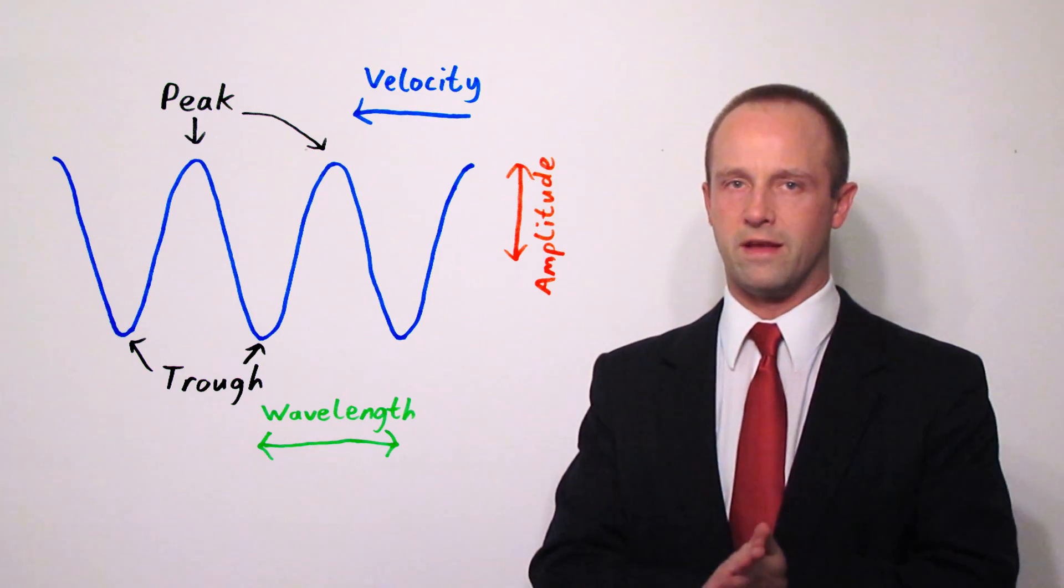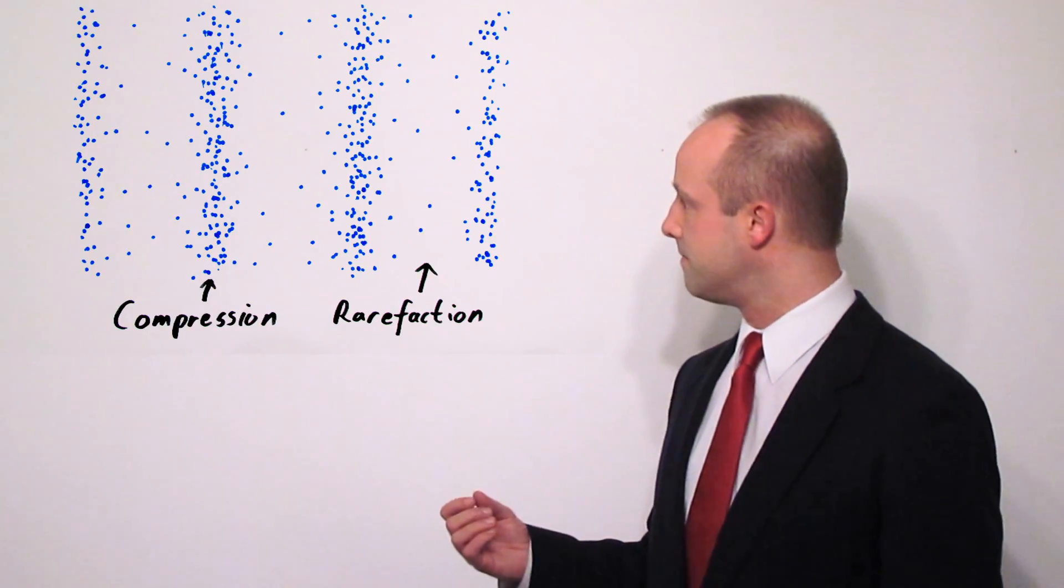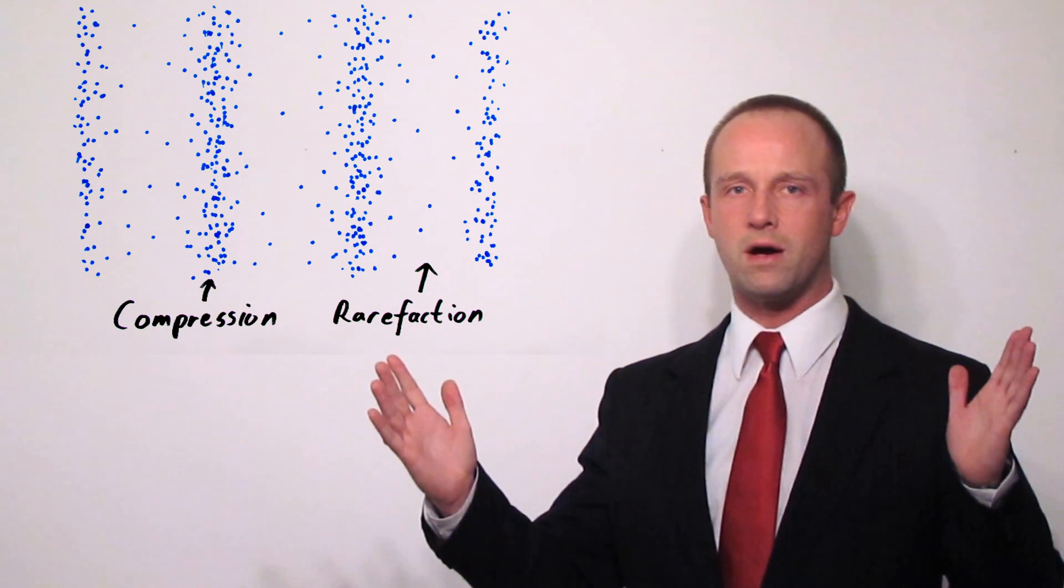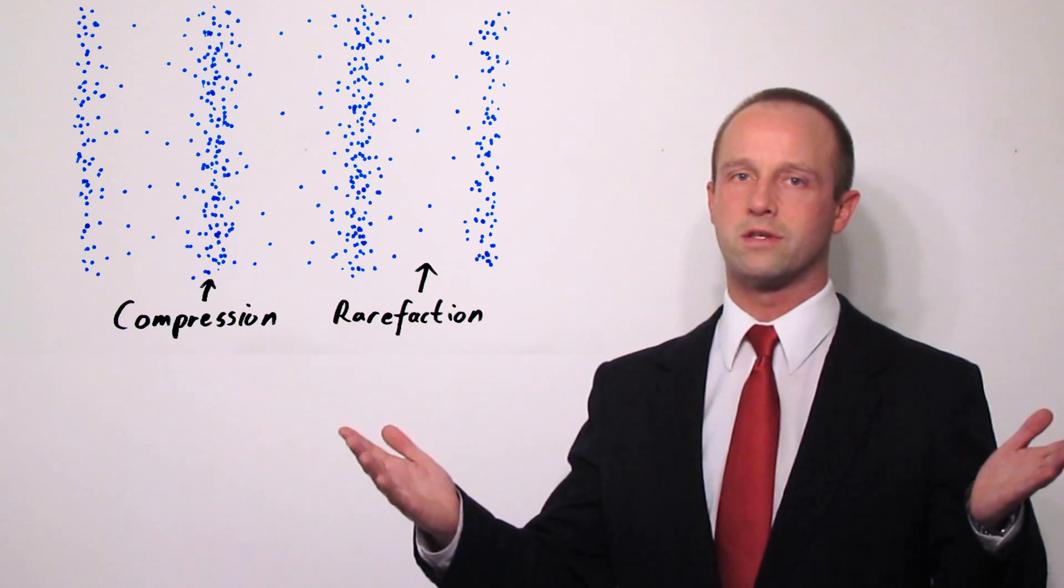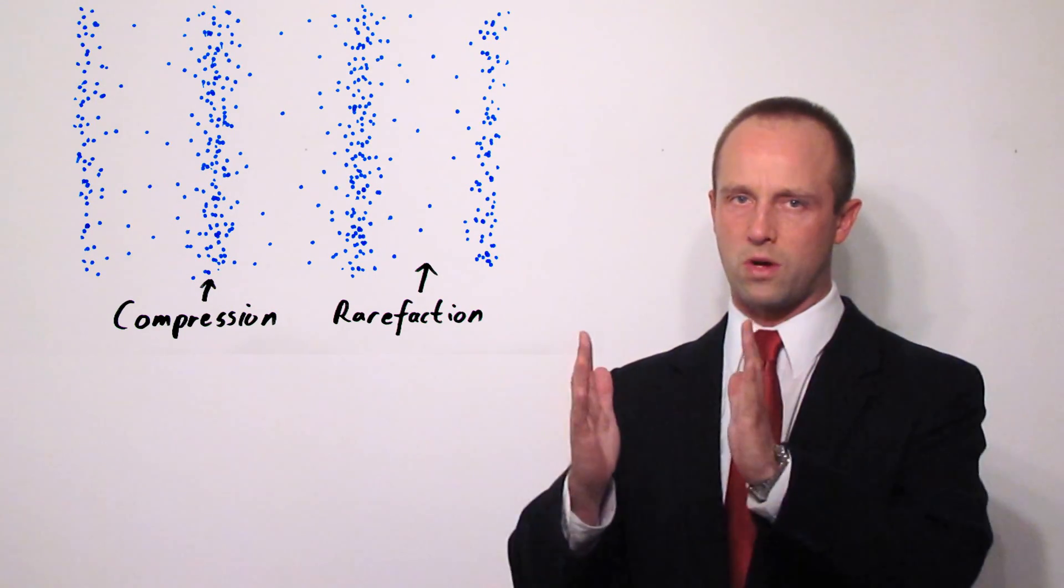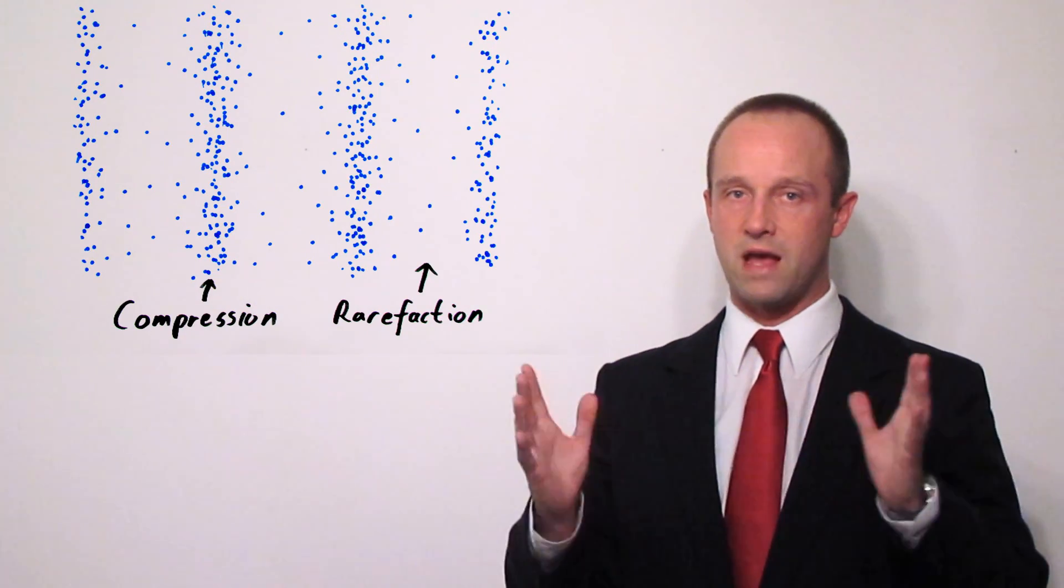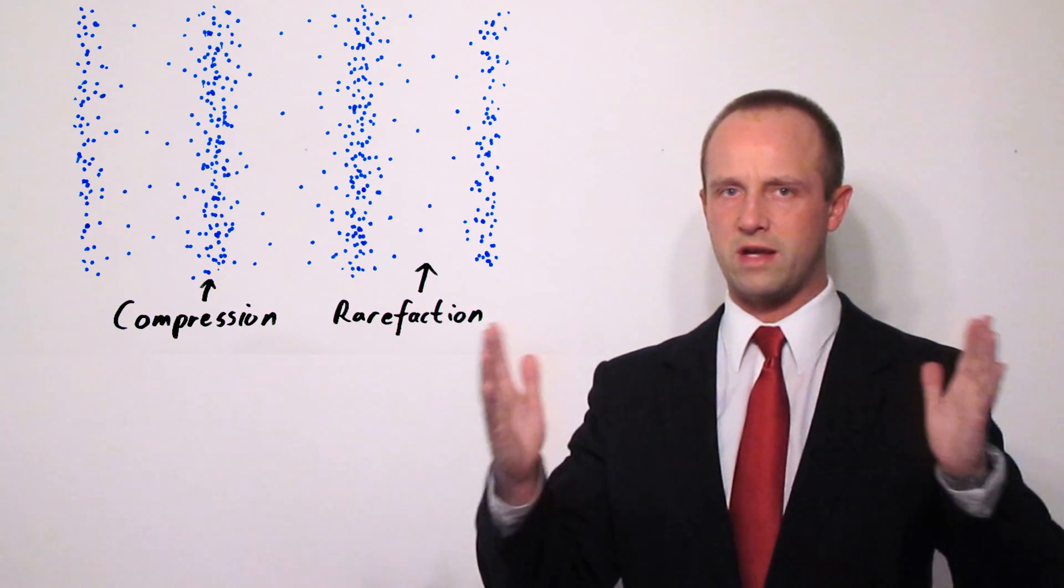Now you can get similar things with a longitudinal wave but it's a little more complex because a longitudinal wave will show areas of compression and rarefaction. So compression is where the particles, for example the air particles, if it's a sound wave, where they're being squashed together and rarefaction is the area between these areas where it's squashed where it's being stretched apart.